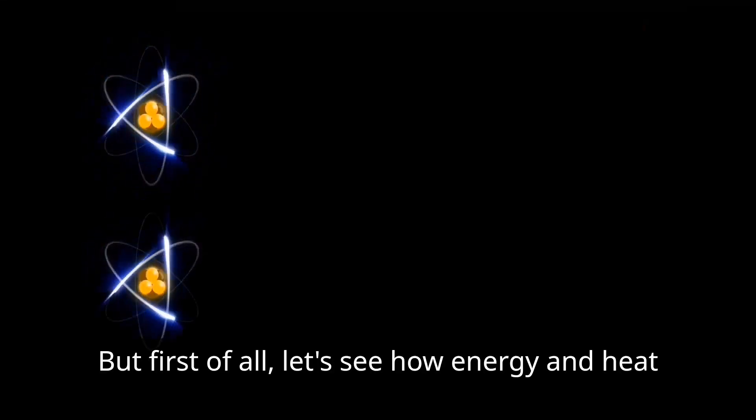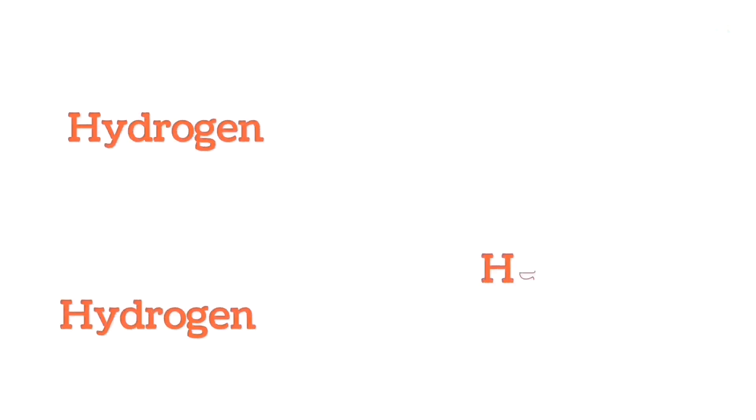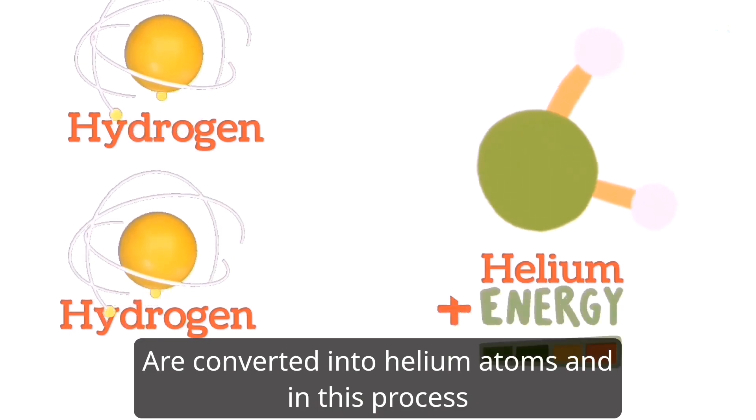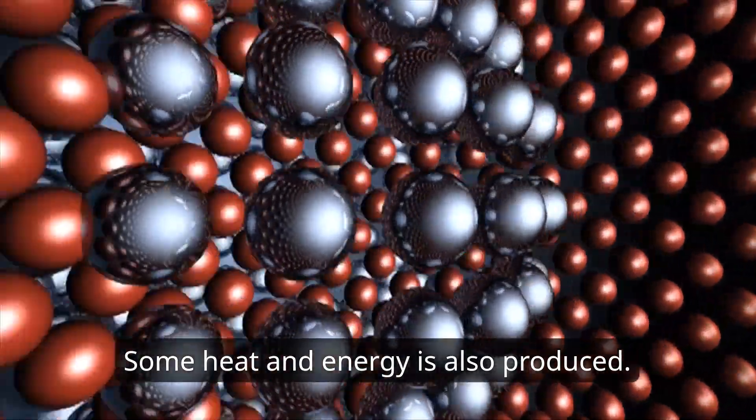But first of all, let's see how energy and heat is produced at the sun. Through nuclear fusion process, hydrogen atoms are converted into helium atoms, and in this process, some heat and energy is also produced.